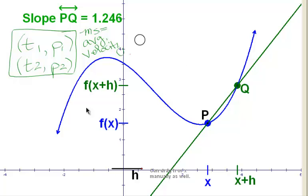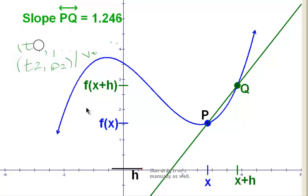How near? Well, arbitrarily near, however near you want me to get. If I can get near, but not at, then I still have two separate points. And I can talk about slope through those two separate points.